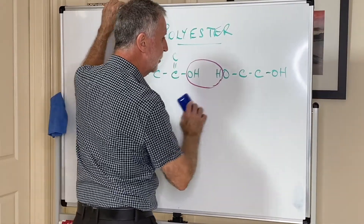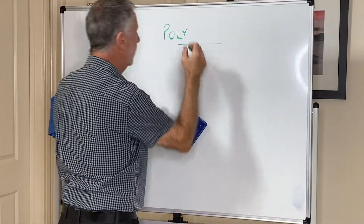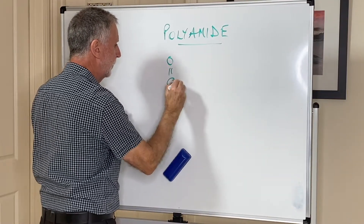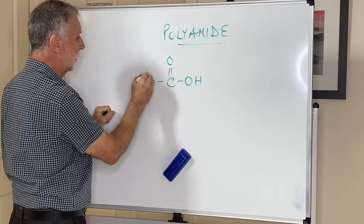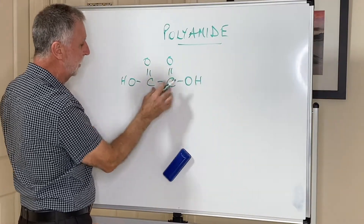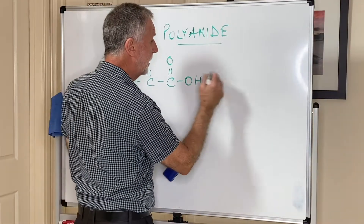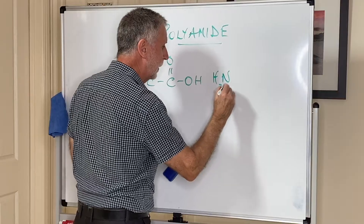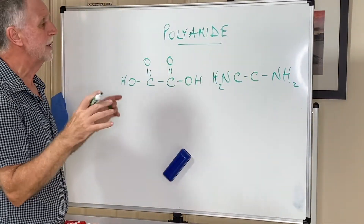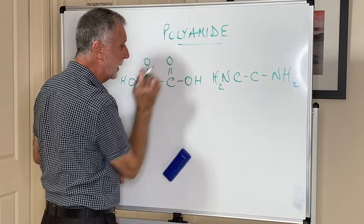The other type of condensation polymer, which is every bit as important, is the polyamide. Again, a carboxylic acid is needed. Incidentally, I'm putting in one more carbon here, but you can put as many atoms between the two carboxylic acid groups as you like — this would just be one form of a polymer. The amine now has to be present for this one: NH2-C-C-NH2. I'm showing you the functional groups that need to be present in order for a polyamide to form.